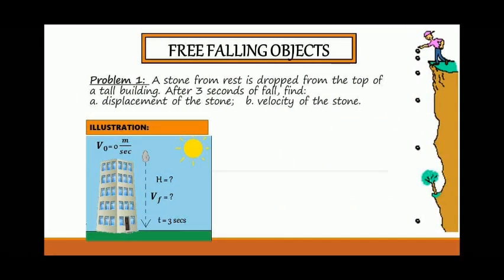Example problem number one: a stone from rest is dropped from the top of a tall building. After three seconds of fall, find the displacement of the stone (letter A) and the velocity of the stone.